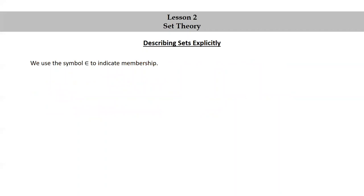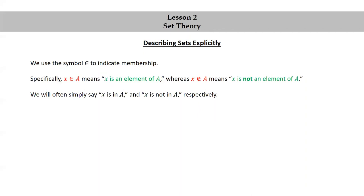We use the symbol epsilon, that's the Greek letter epsilon, to indicate membership. Specifically, X epsilon A means X is an element of A, whereas X epsilon with a line through it A means X is not an element of A. We will often simply say X is in A and X is not in A, respectively.